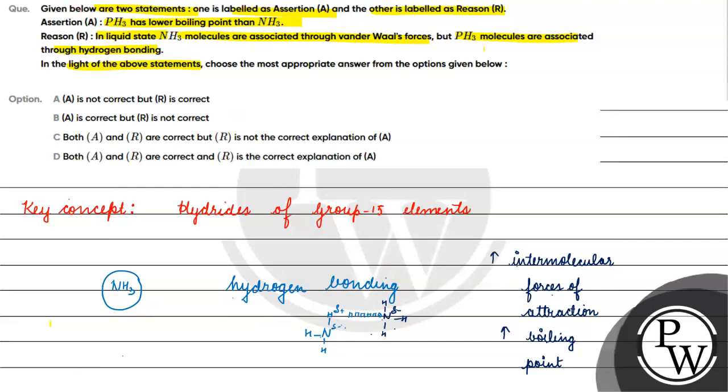If we talk about pH3, in pH3 there is no hydrogen bonding. Hydrogen bonding occurs with fluorine, oxygen and nitrogen. In pH3 there will be Van der Waals forces of attraction which are comparatively weaker forces of attraction. Because in pH3 we have weaker forces, the boiling point will be reduced and NH3 is correct.